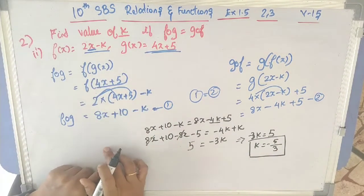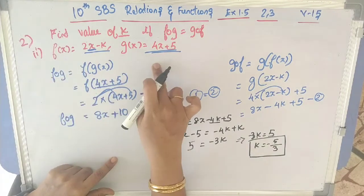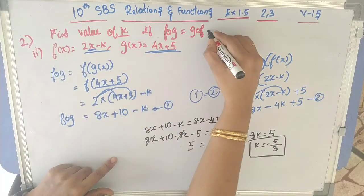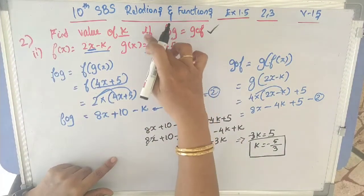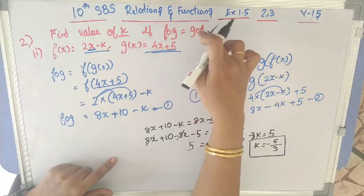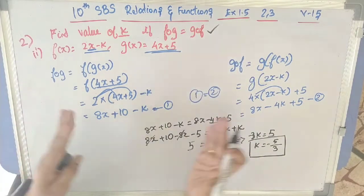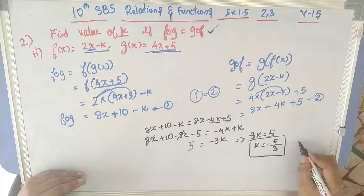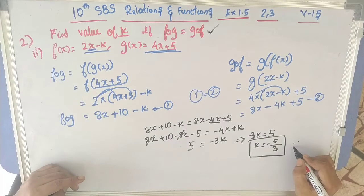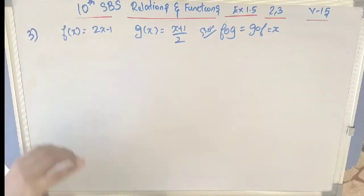I have used the given f(x) and g(x) to find f∘g and g∘f. Since the condition f∘g = g∘f is given, I compared both equations and found k.